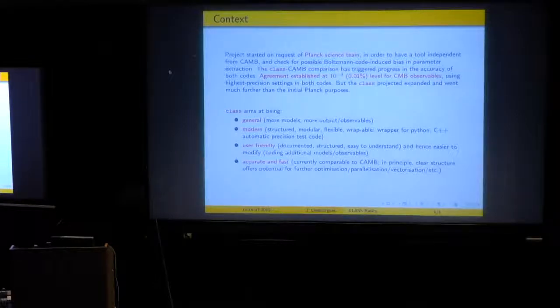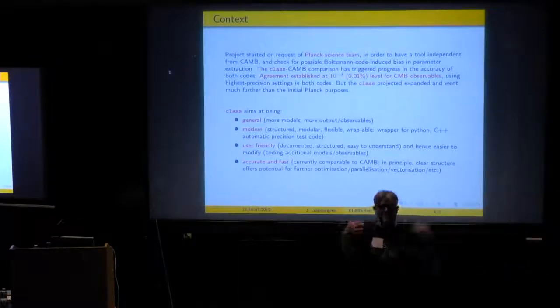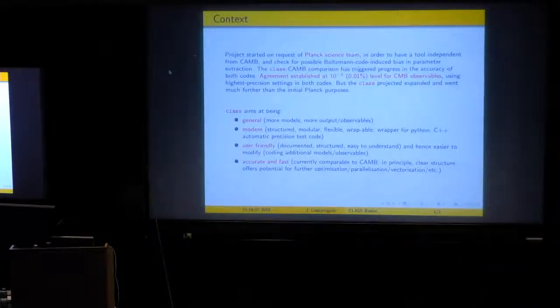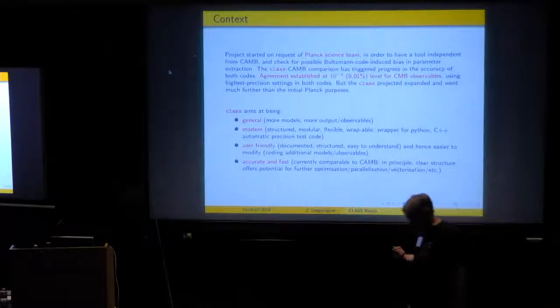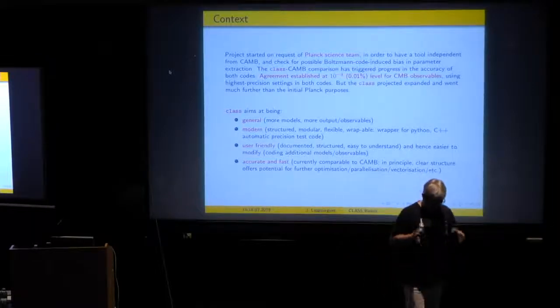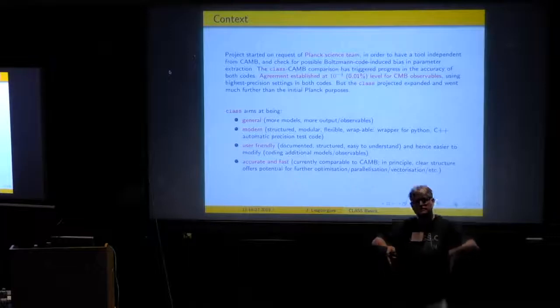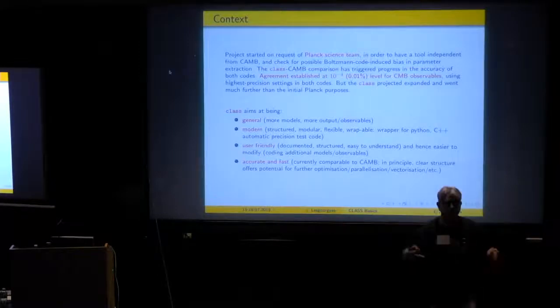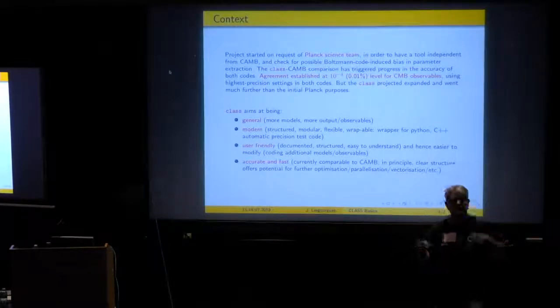They wanted something written from scratch and not just by copy-pasting equations and reshuffling them, which had been the case, more or less, between the last version of CMBfast and the first version of CAMB. So this is what motivated me. At the beginning, I worked alone for a few years, and then I finished with Thomas in 2011. And indeed, one of the first tasks was to compare CLASS and CAMB in their highest accuracy limits. This is a comparison that you find in one of the papers from 2011 called CLASS III. And this comparison was really interesting because it revealed at the beginning some inaccuracies in the two codes.